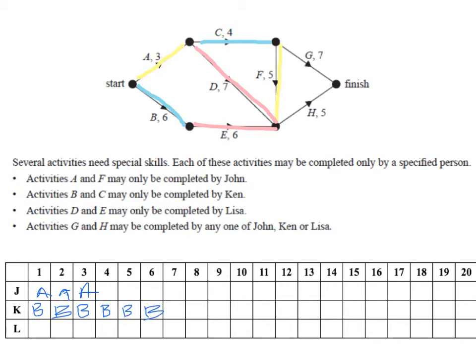Now, once activity B is finished, we could start activity E. And Lisa has to complete that. But she could get a head start on D because it can start at hour four as soon as A is finished. So let's start Lisa off at hour four once A is finished on activity D. So, and it takes seven.